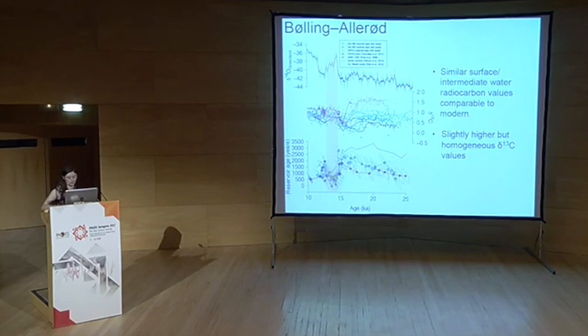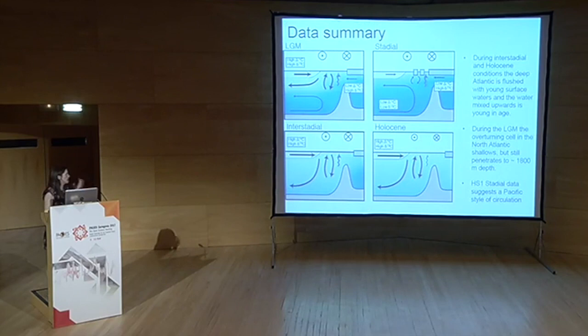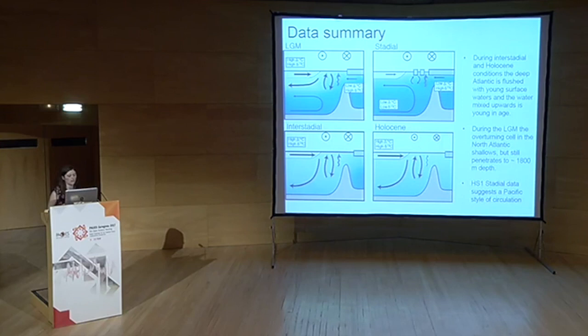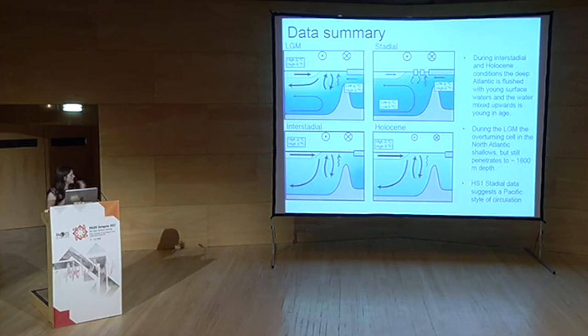Ocean circulation model for these time slices: during the LGM, distinct water masses and 1,000-year reservoir ages possibly from an old Arctic source, plausible due to increased sea ice reducing air-sea gas exchange. During the stadial, a proposed Pacific-style circulation where deep water influence is felt in the surface in both Δ13C and radiocarbon. During the interstadial, something similar to the modern with active deep water formation, so any water returned to the surface through upwelling is young in age.